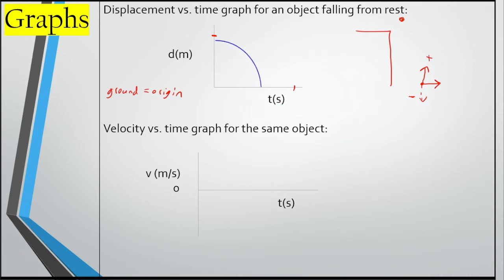The graph is a curved line because the ball is covering more and more distance as time goes on, meaning it's experiencing acceleration — a non-constant velocity. This graph tells us that after a few seconds the ball has gained only a few meters, but after each additional second it covers a lot more meters. The curved line tells us our object is accelerating, because the slope of a displacement versus time graph is velocity, and if it's curved it means velocity is not constant.